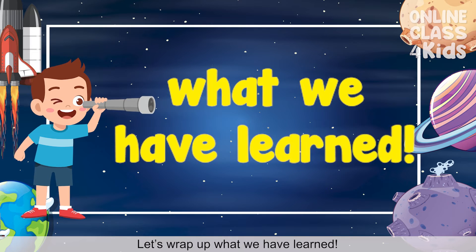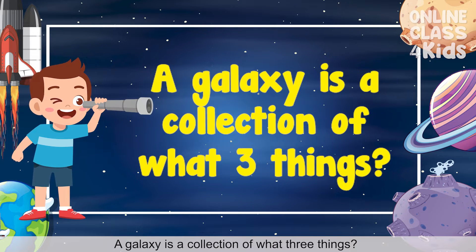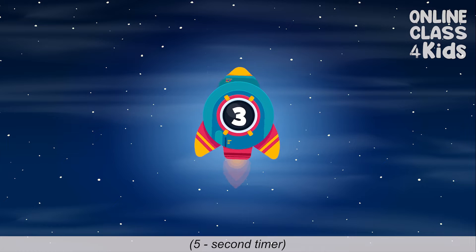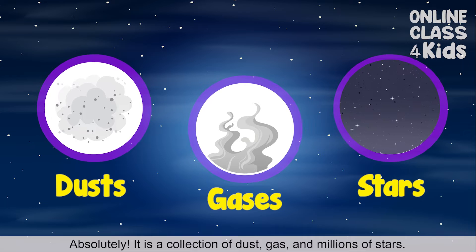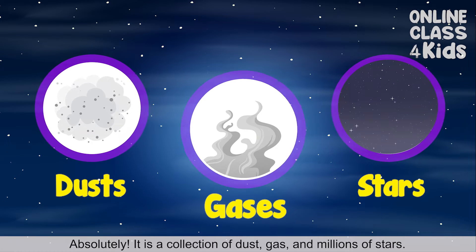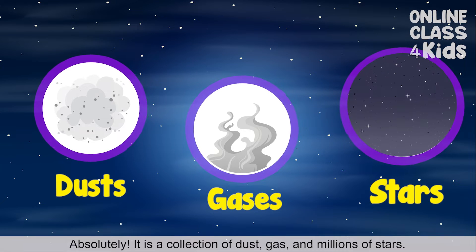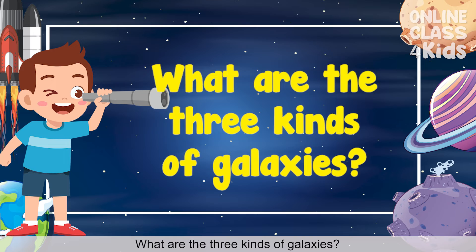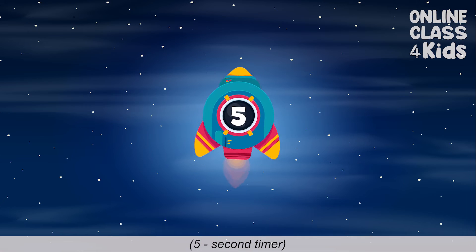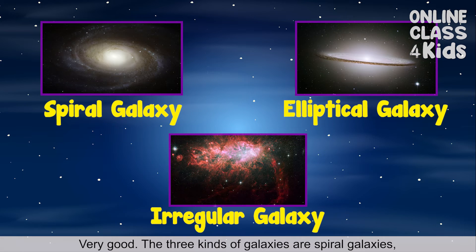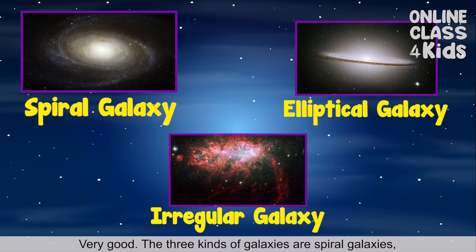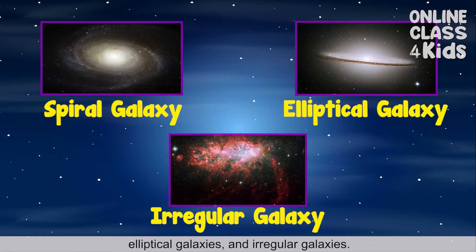Let's wrap up what we have learned. A galaxy is a collection of dust, gas, and millions of stars. The three kinds of galaxies are spiral galaxies, elliptical galaxies, and irregular galaxies.